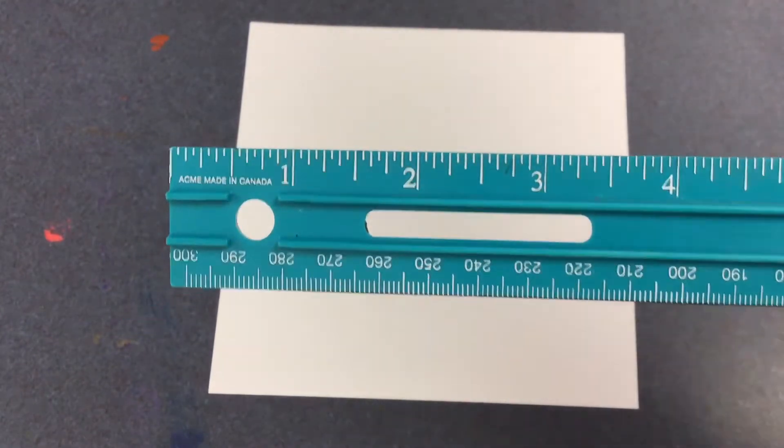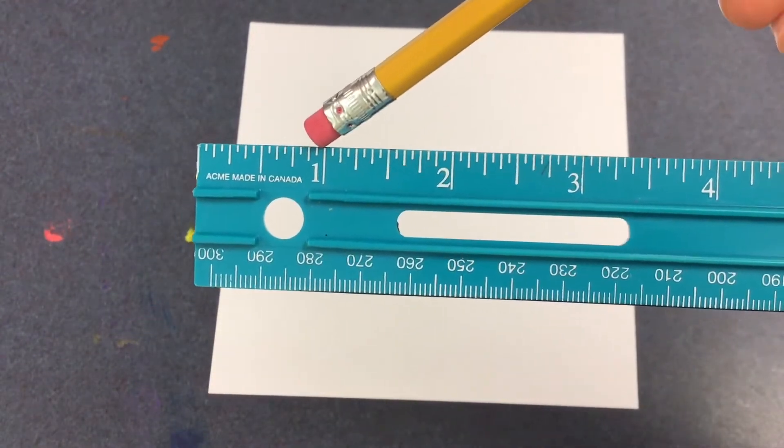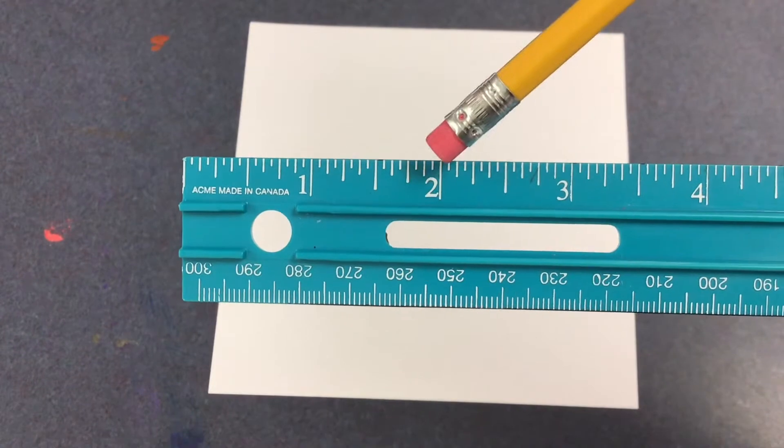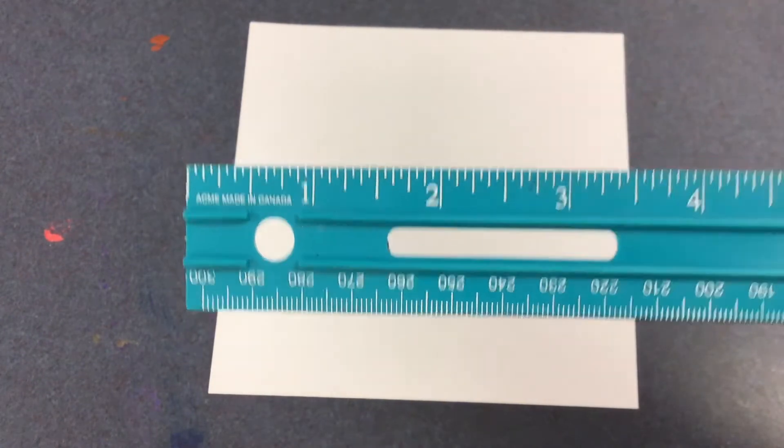You're going to draw a checkerboard pattern. Make sure you're reading the inches side on your ruler, the side where the numbers are printed larger in size.